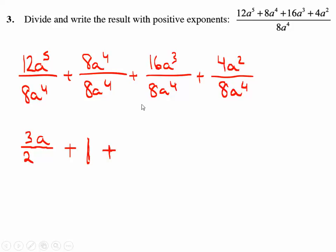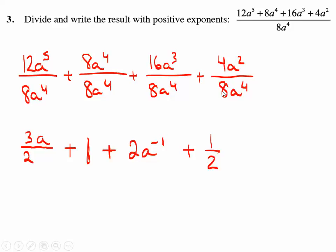Then 8 goes into 16 twice. Notice this one has a to the 3rd on top and a to the 4th on the bottom, so there's an extra a on the bottom. We can think of it as subtraction: 3 minus 4 is negative 1. And 4 divided by 8 doesn't simplify to a whole number, so it would be one half in reduced form. And 2 subtract 4 is negative 2.